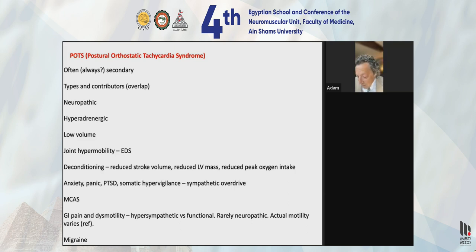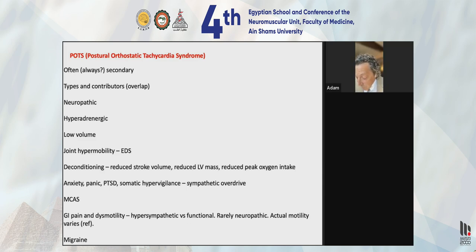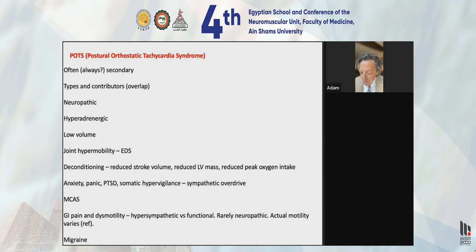Another contributor people discuss is mast cell activation. In almost all cases, mast cell activation is secondary to excess adrenaline — adrenaline activating mast cells locally in the skin and in the GI tract. But in rare cases, people have primary mast cell activation, which can contribute to a POTS-like state by causing relative hypovolemia through third spacing of fluid or excess vasodilation.